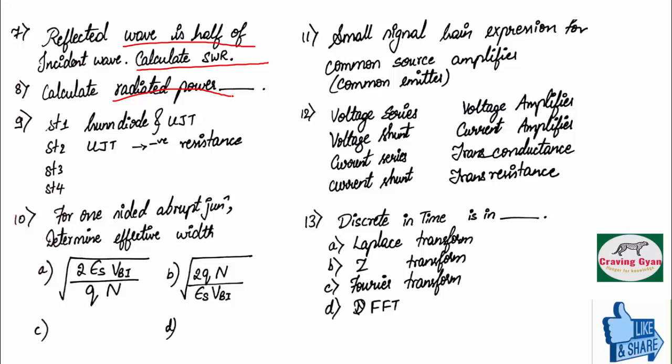Eighth question. Given some set of data values, you have to calculate radiated power. Ninth question, they have given 4 statements. Out of these 4 statements, you have to pick 2 statements which are correct.